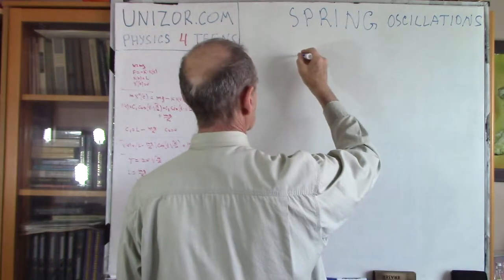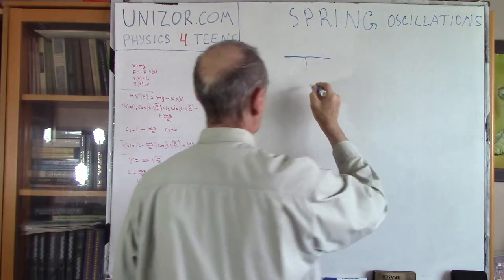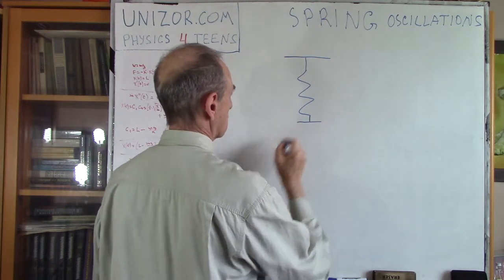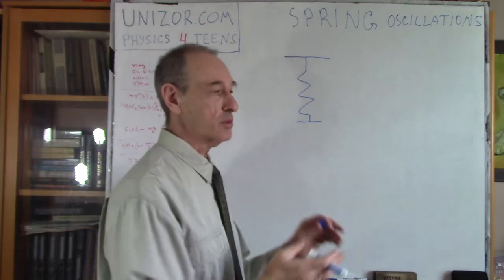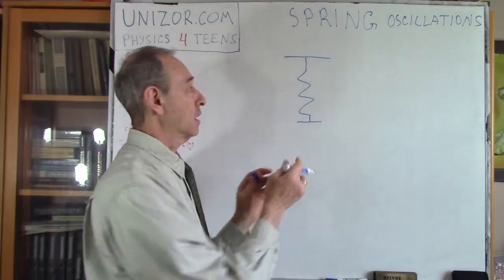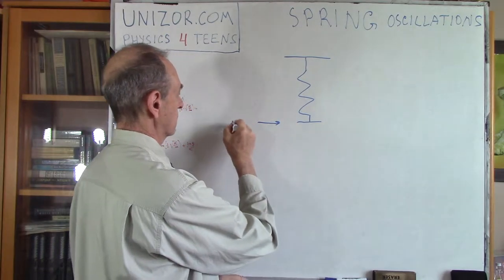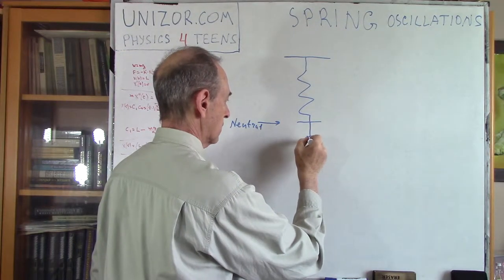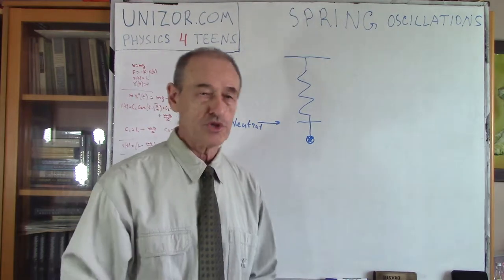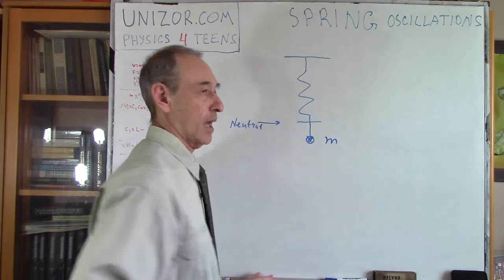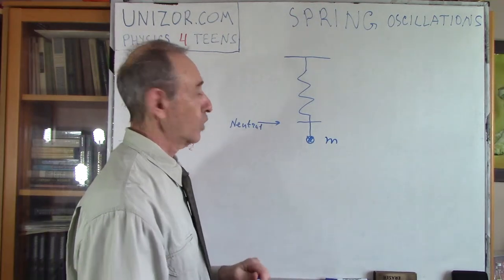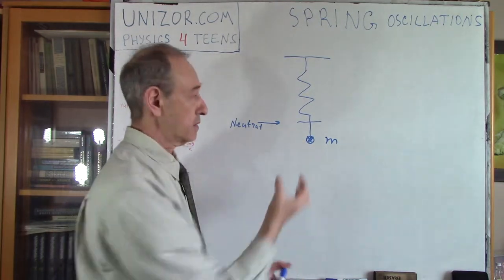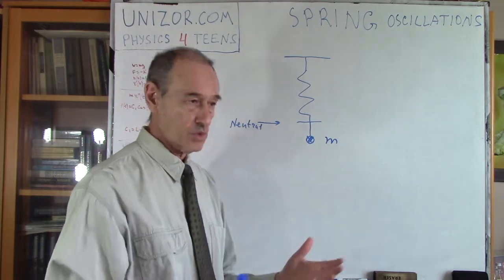Let's consider we have the following situation. Here is our spring, and this is the spring in its neutral position. Neutral means that it can stretch a little or it can contract a little — this is the neutral level. Then we have a little weight here, a point object which has a certain mass M. What happens with the spring if we just hang this object? Well, it will stretch a little bit under the weight of this object.